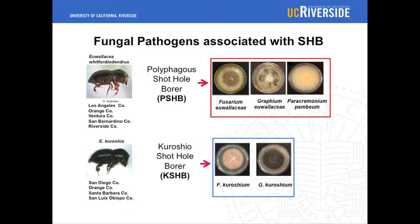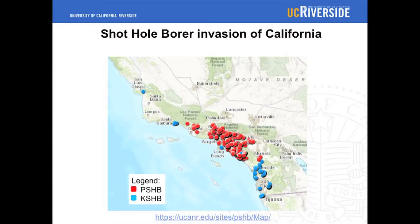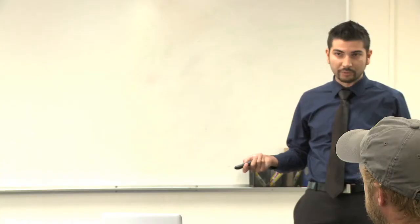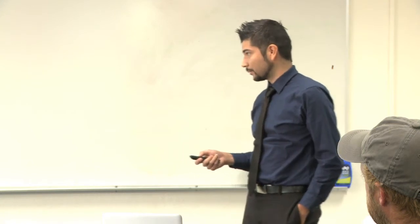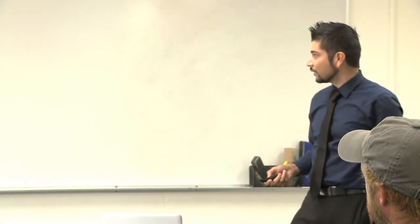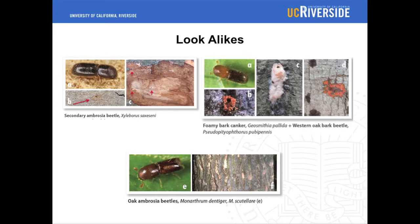In 2014, we received reports of what we thought were shot hole borers in avocado groves. When the entomologists identified it, they found it's actually a different but closely related beetle to polyphagous shot hole borer. The common name for it is Corotio shot hole borer, and it has since been named Euwallacea corrotus. First found in San Diego County, it has spread into other counties and has been positively identified in Santa Barbara County and San Luis Obispo from an insect trap. We suspect probably movement of firewood, because it really doesn't make sense how it got up so north so fast.